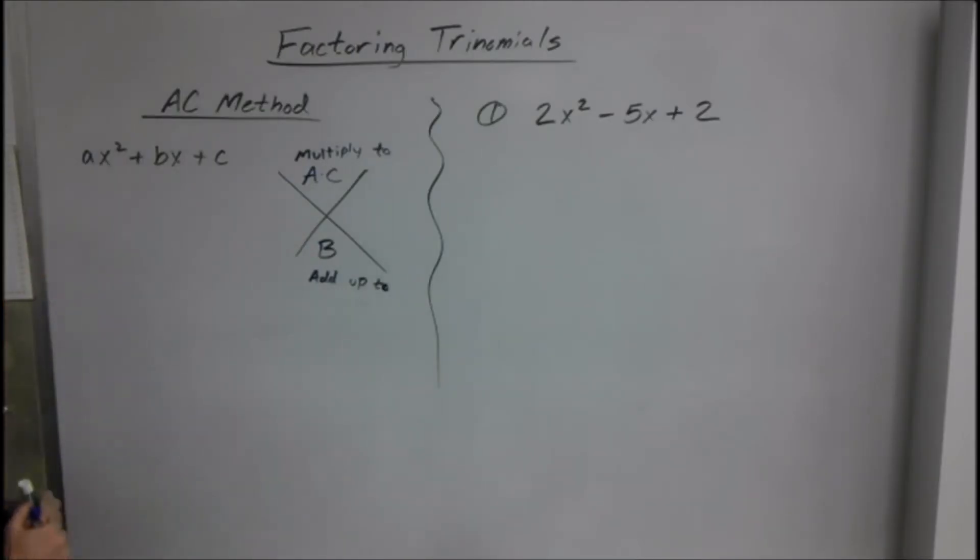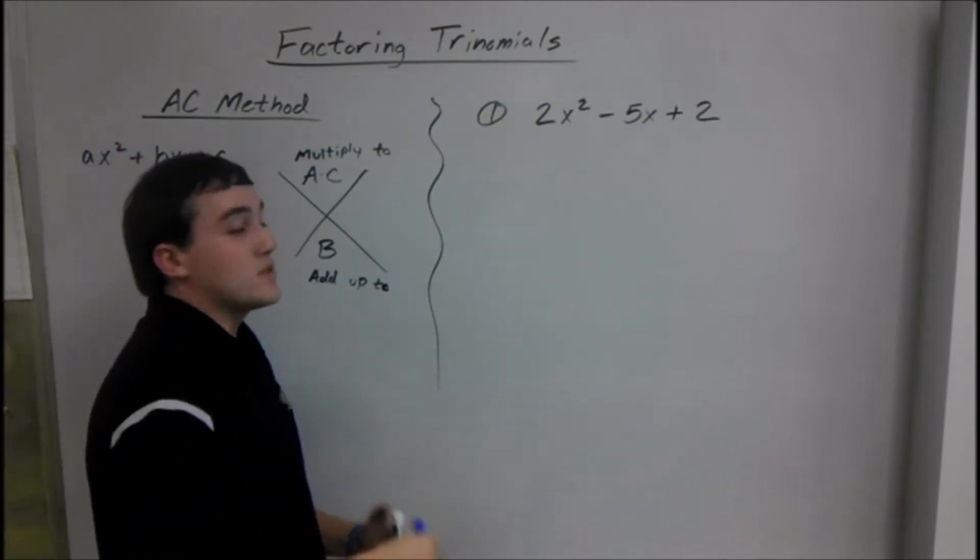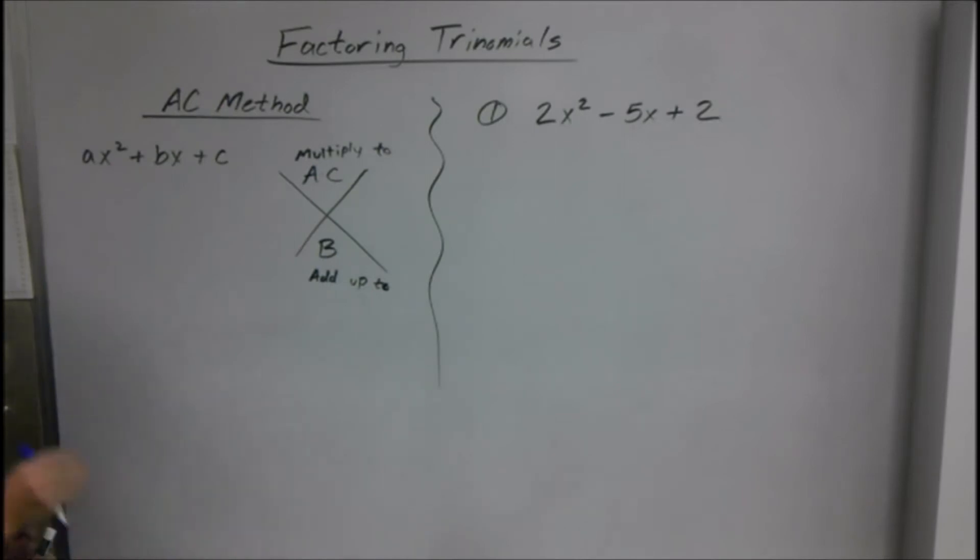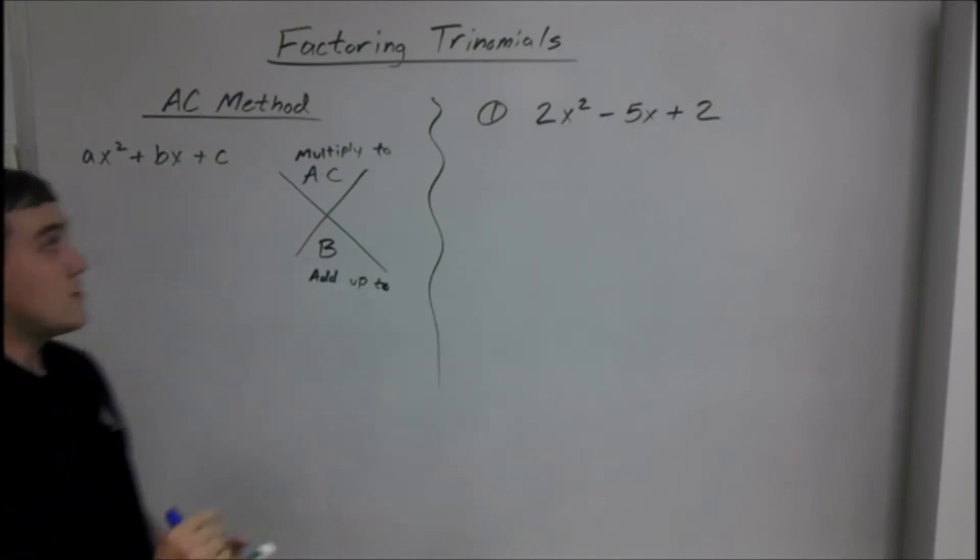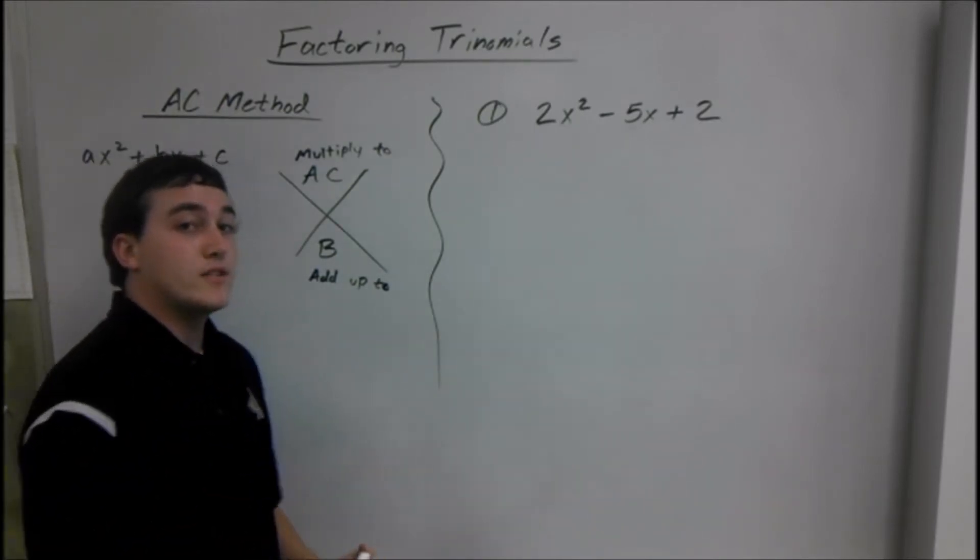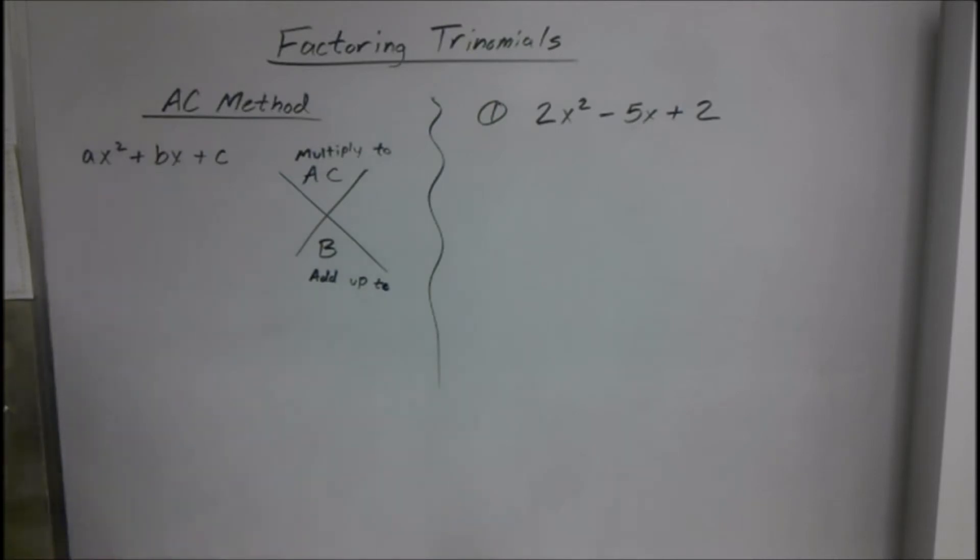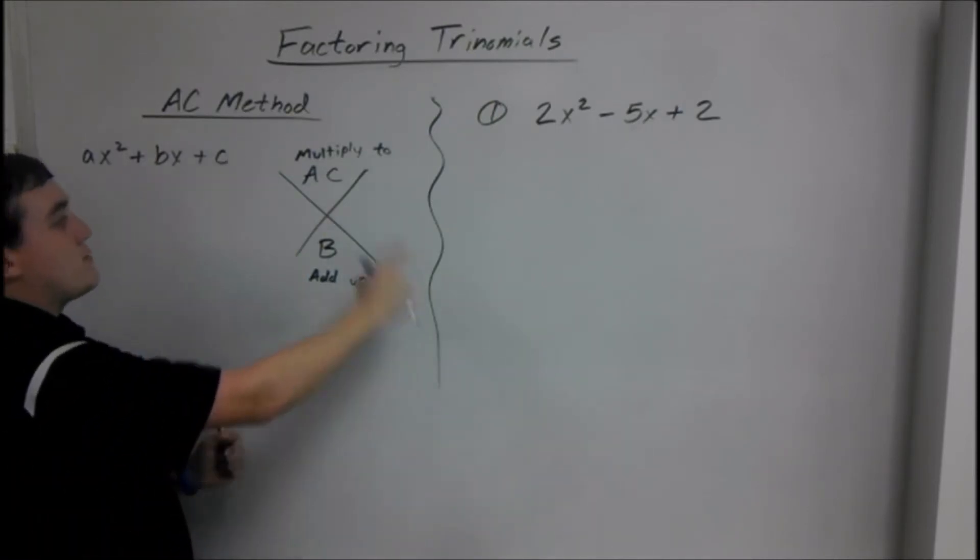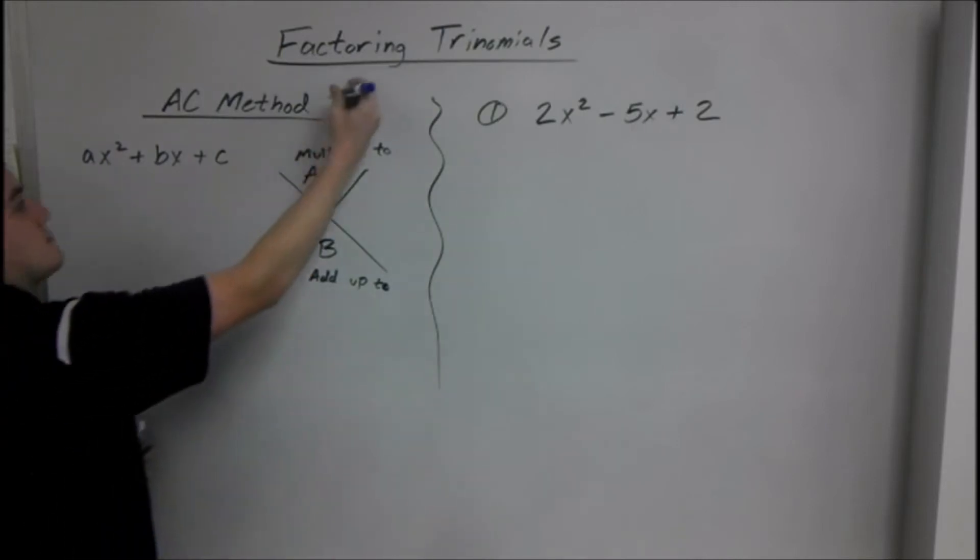The method I use is called the AC method, and I think it's the best way to do it because it works for other polynomials and not just certain types. Because there is a trick, and if you use the trick every time, you're going to get it wrong sometimes. So the way to use the AC method is set up an X. It's also called the Xbox method.